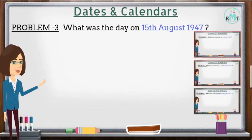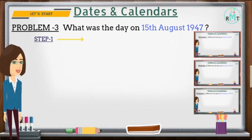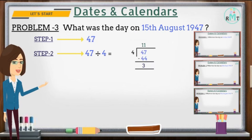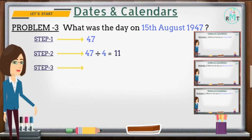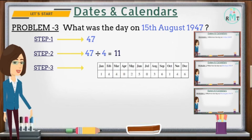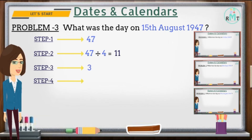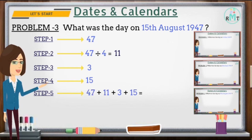Problem 3: What was the day on 15th August 1947? Step 1: Take the last two digits of the year, which is 47. Step 2: Divide 47 by 4 and take the quotient, which is 11. Step 3: Write the key associated with the month August, that is 3. Step 4: Take the date, which is 15. Step 5: Add all the digits — 47 + 11 + 3 + 15 — so we get 76.